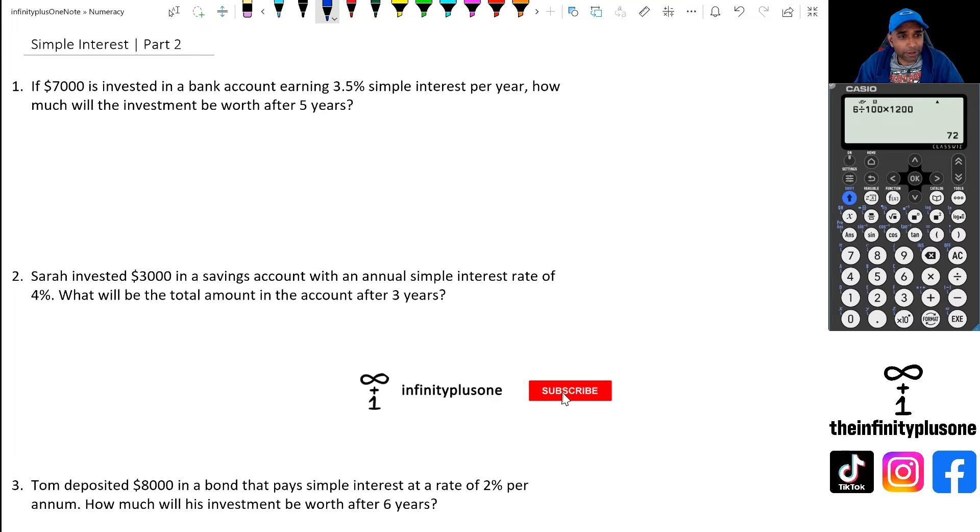So what we're doing is we're going to actually work out what the simple interest after five years is, and then we're going to add that on to 7,000. Our first step is to work out what 3.5% of 7,000 is.